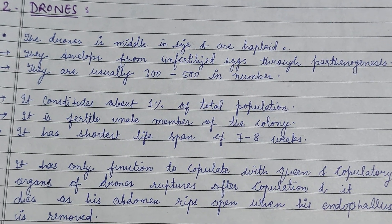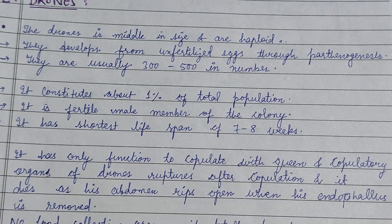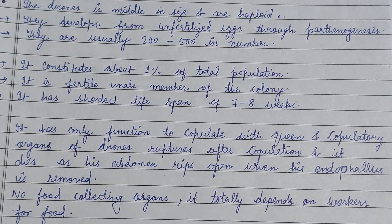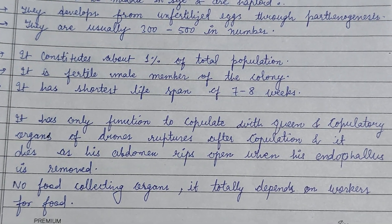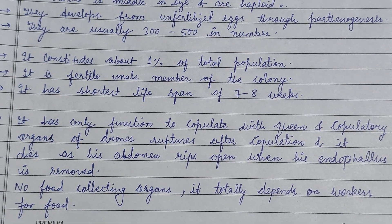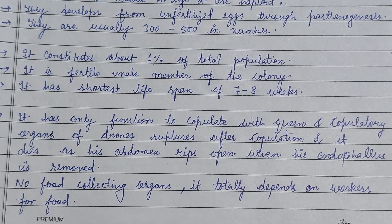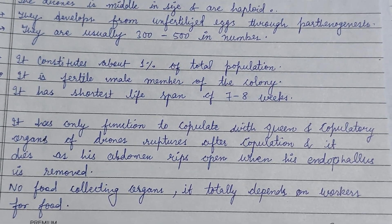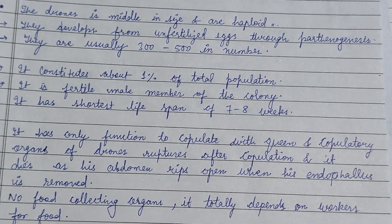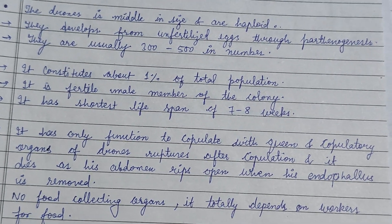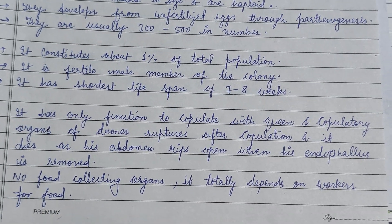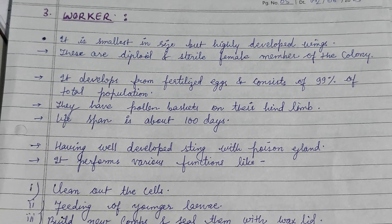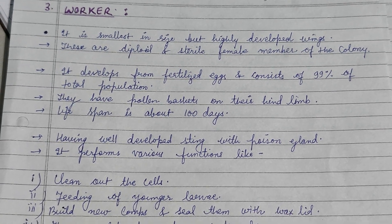The drone is the only fertile male member of the colony. It is middle-sized, haploid, and developed from an unfertilized egg through parthenogenesis. Its only function is to copulate with the queen. The copulatory organs of the drone rupture after copulation and it dies as its abdomen splits open when the intromittent organ is removed.